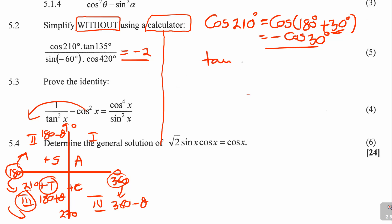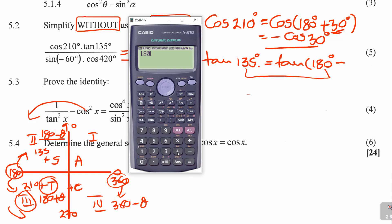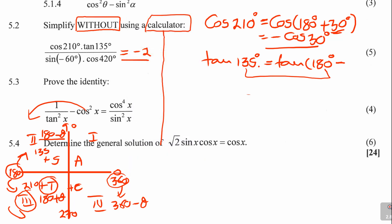Next one is tan 135. You ask yourself which quadrant — it's quadrant 2. The reduction rule is 180 minus theta. What number must I subtract from 180 to get 135? Subtract the two numbers: 180 minus 135 equals 45. So if I subtract 45 from 180, it gives me 135. From there, only sine is positive in quadrant 2, meaning tan is negative. So it becomes negative tan 45 degrees. Reduction rules, guys.